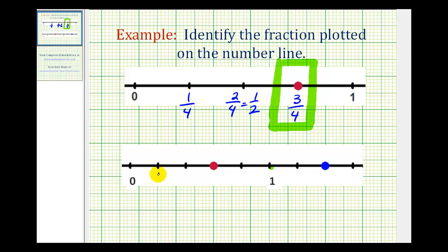So this would be one-fifth, two-fifths. So this red point represents three-fifths. Then we'd have four-fifths. Then this would be five-fifths, which is equal to one. And then we'd have six-fifths, seven-fifths, and so on. So the two fractions plotted on this number line are three-fifths and seven-fifths.